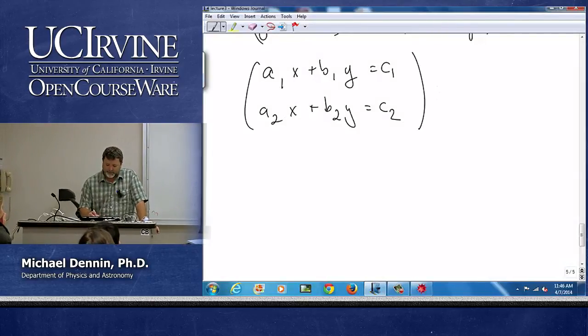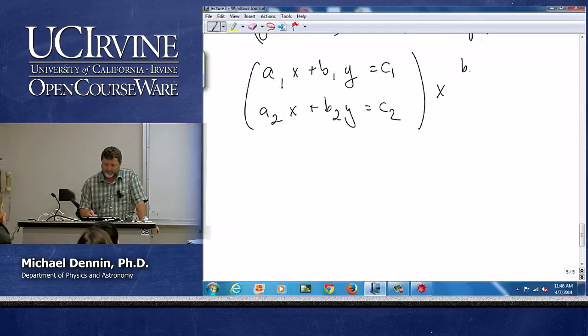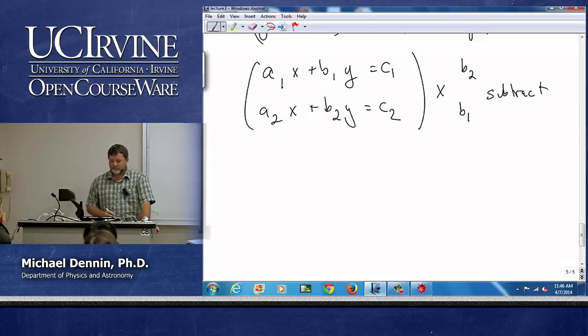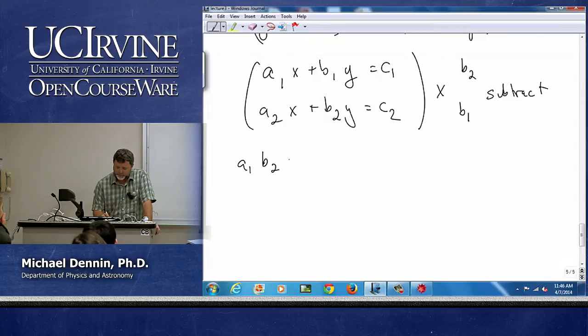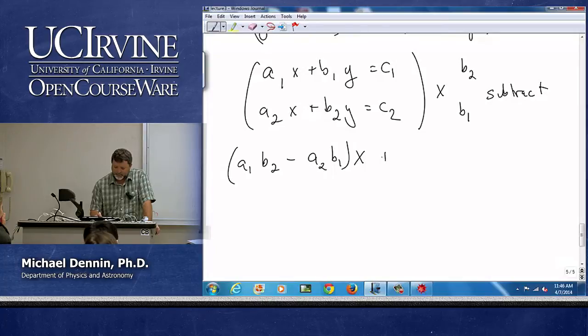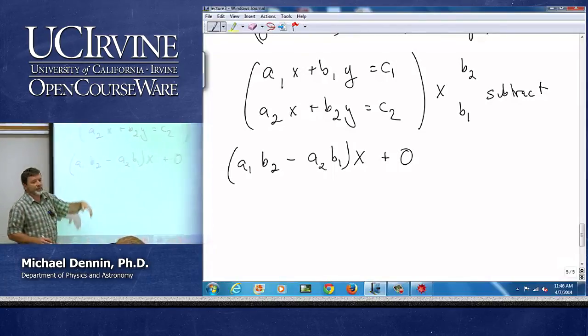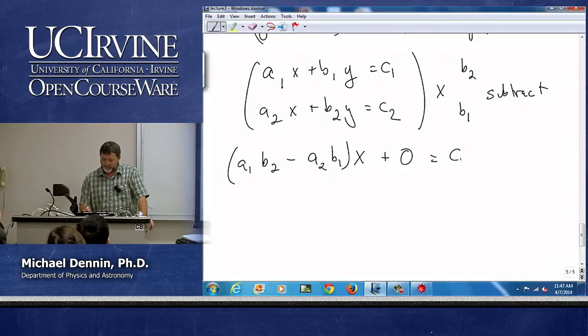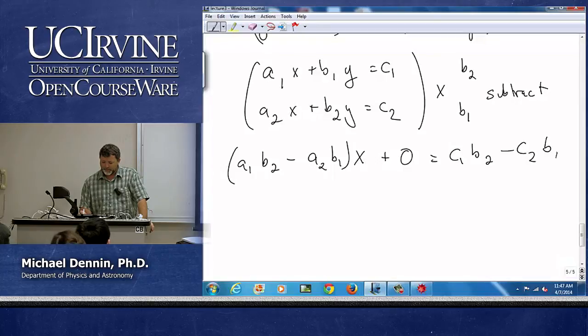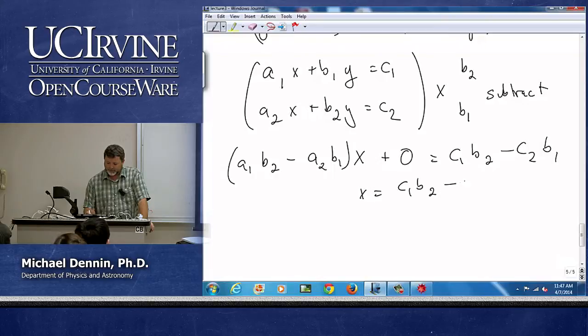But if I have two variables, two equations and everything is perfectly linear, then life is easy. I take my system of equations, I multiply the top by b2, the bottom by b1, and I subtract. What does that do for me? It gives me a1b2 minus a2b1 times x plus zero, right, because the y part b1b2b2b1 cancels out, equals c1b2 minus c2b1.